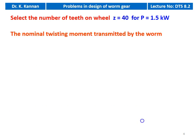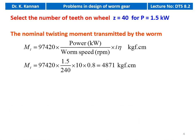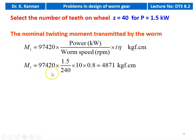We calculate the nominal twisting moment transmitted by the worm. Mt = 97,420 × (power in kW) / (worm speed in RPM × i × η), where i is the speed reduction and η is the efficiency of the drive. Substituting numerical values: Mt = 97,420 × 1.5 / (240 × 10 × 0.8) = 4871 kilogram-force centimeter.